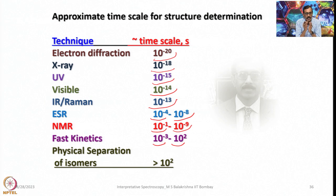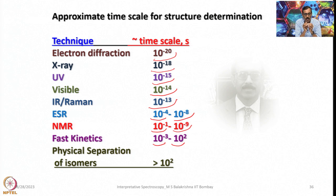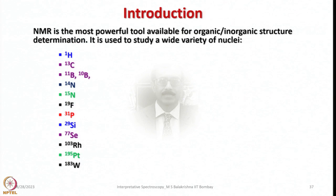That means for physical separation the time scale should be greater than 10⁻² seconds, meaning the isomers formed should not undergo isomerization within 100 seconds. As mentioned, NMR is the most powerful tool available for organic and inorganic structure determination.